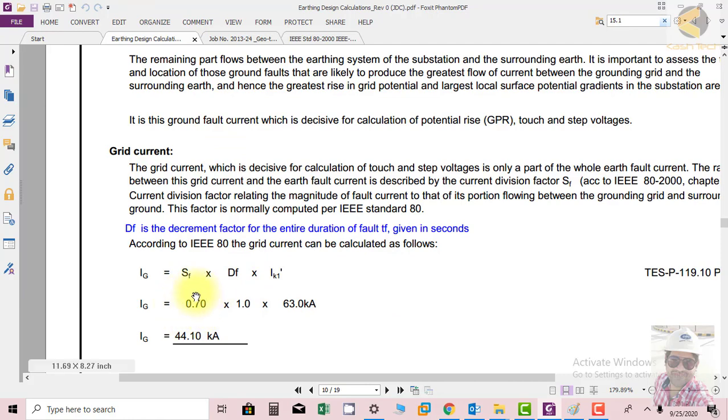DF here is basically the detrimental factor for the entire region of fault, given in seconds. In the start, we have taken the maximum fault time as 0.5 seconds and thermal capacity as one second, so we have to put here one.